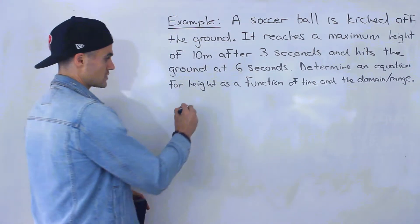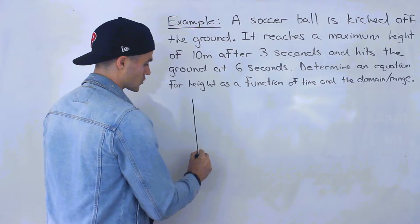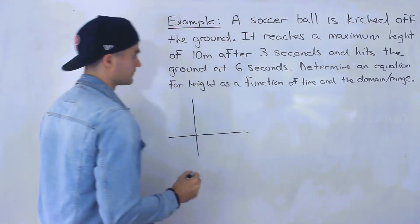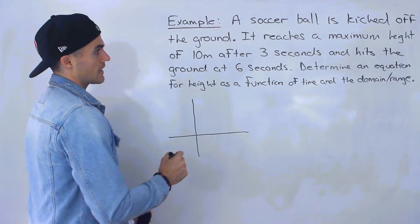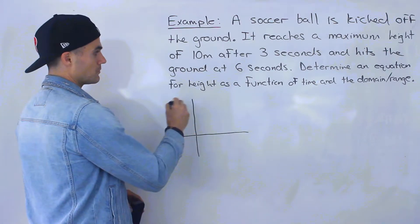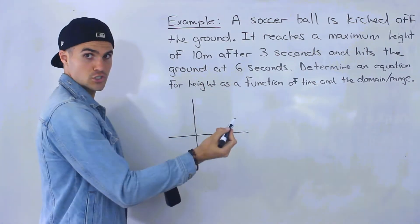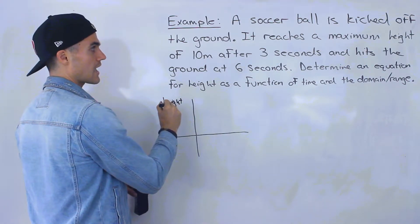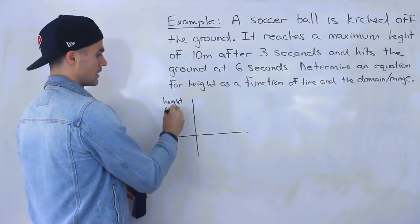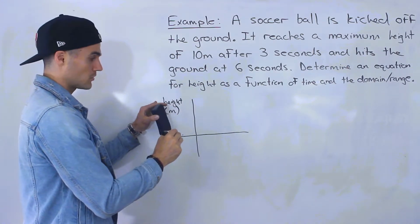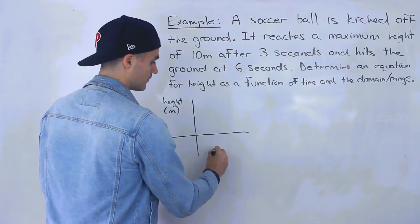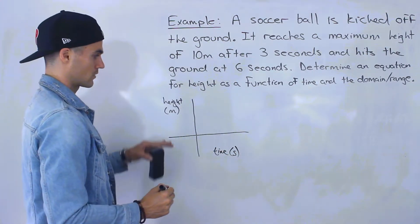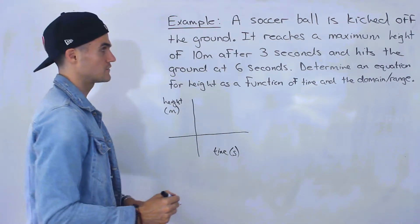When I get a question like this, the first thing I like to do is try to make a graph of the situation. Notice that we're going to be modeling height as a function of time. Height, in meters, is the dependent variable, and time, in seconds, is the independent variable — height as a function of time.